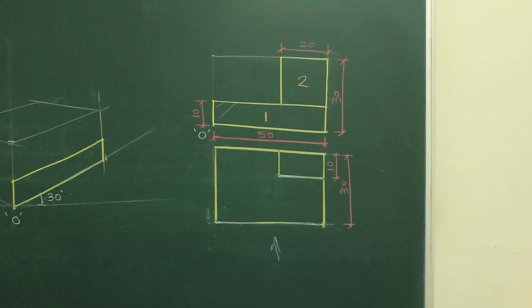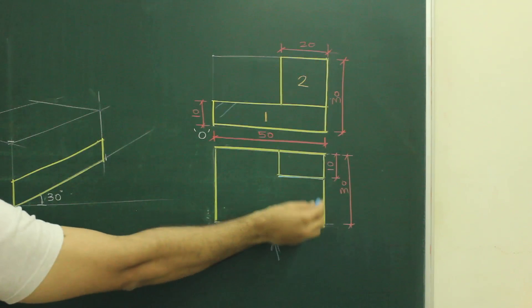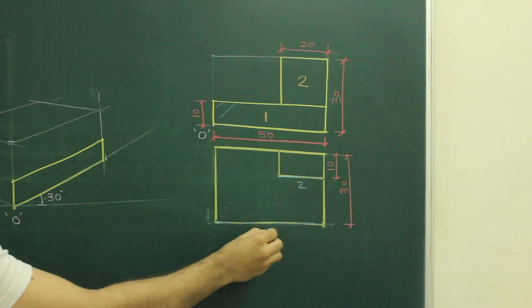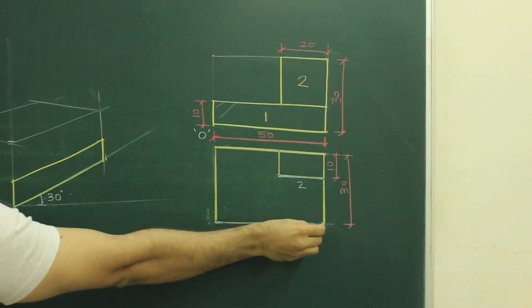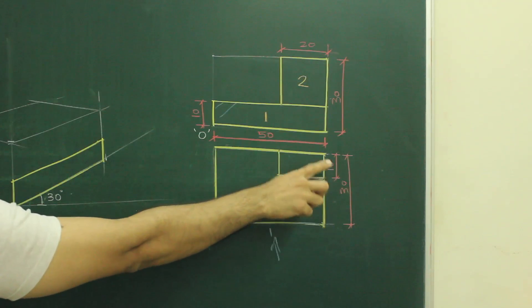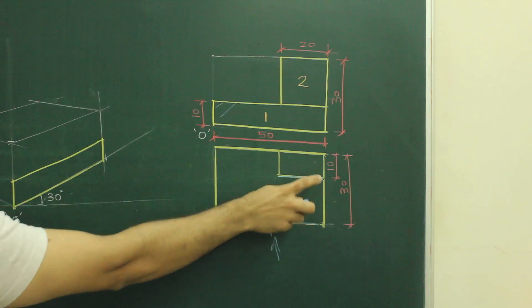After drawing this part, if you see top view, how much it is going behind to draw part 2. See this is part 1 what we have drawn. Now part 2, so how much I have to go behind. This is 30 minus 10, so how much would be this? 20.